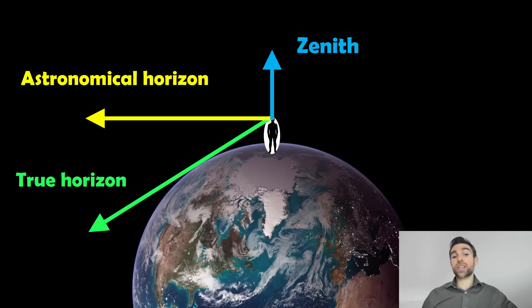And at 90 degrees to the zenith, that's our astronomical horizon. We also have our true horizon where we're actually looking, but the astronomical horizon is always going to be 90 degrees or a right angle to directly above you.